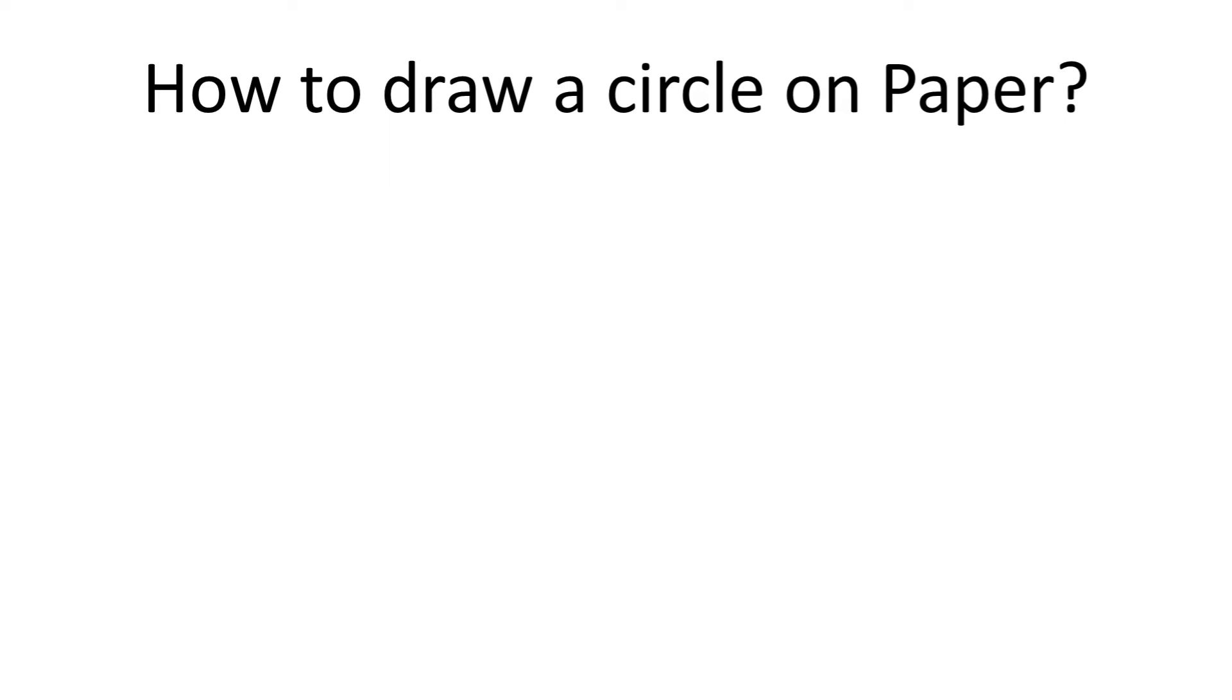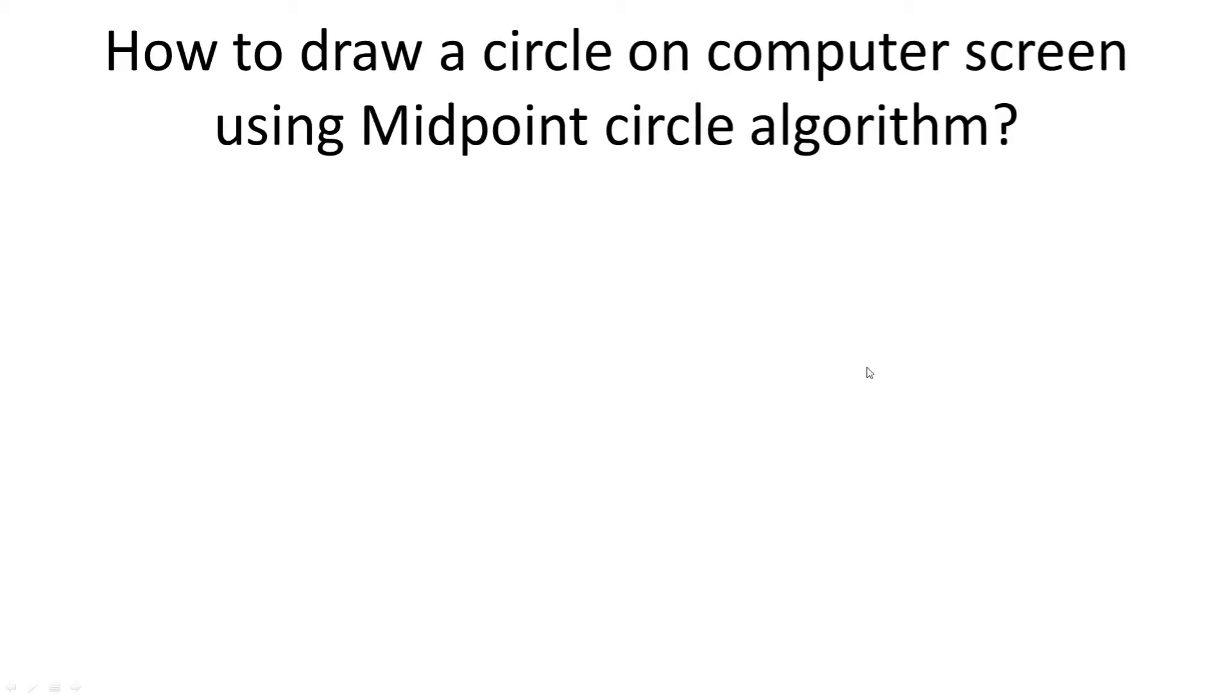So first thing, how do we draw a circle on paper? We have the formula pi r square, 3.14 into the radius square. So you draw the radius, that is the point from the center till the circumference, and then you draw the circle with a pair of compasses. Now what about drawing it on a computer screen? Well, for that we use midpoint circle algorithm.